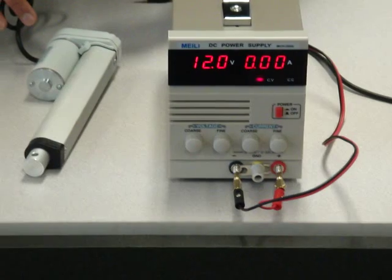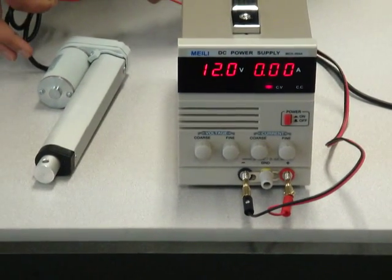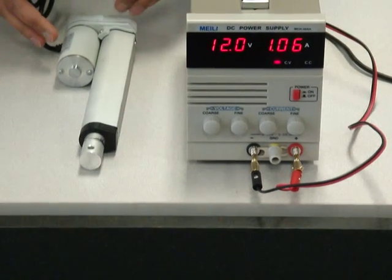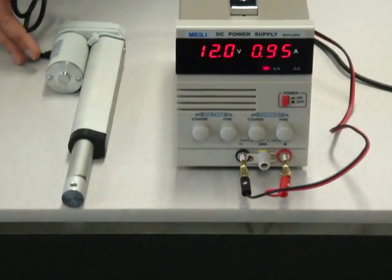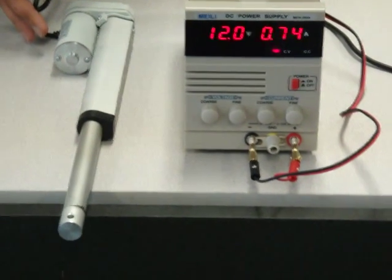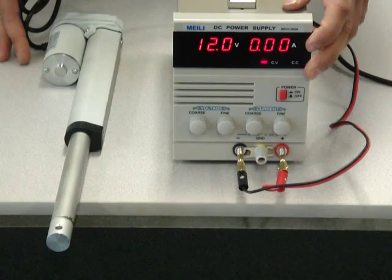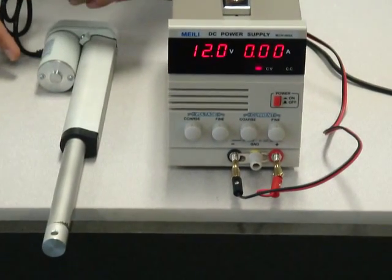I'm going to add the power to the actuator and as it extends you will see the amperage increase. As you can see once it fully extends the amperage goes down, the amperage draw goes to zero and the power has been cut off.